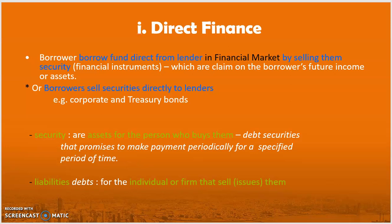In direct finance, a borrower borrows funds directly from a lender in the financial market by selling them a security — also called a financial instrument — which is a claim on the borrower's future income or assets. The borrower sells the security directly to the lenders, for example, corporate and treasury bonds. The security is an asset for the person who buys it, meaning it is an asset for the lenders. The borrower, having sold the security, will have a liability arising from that sale.